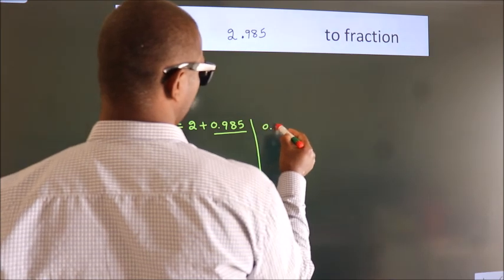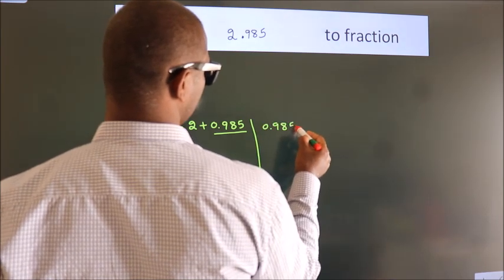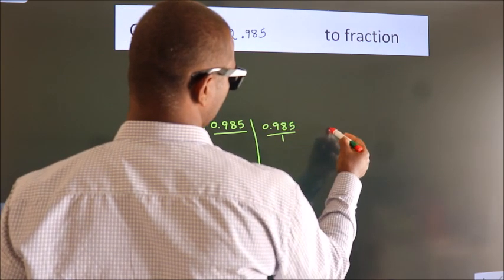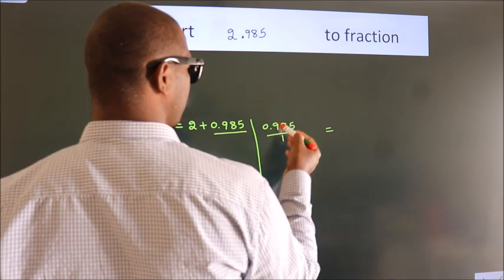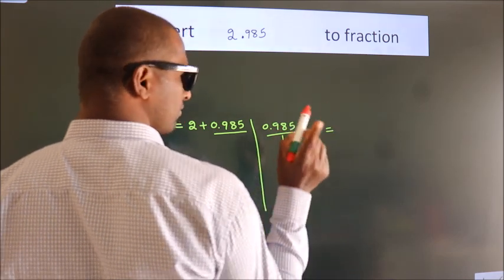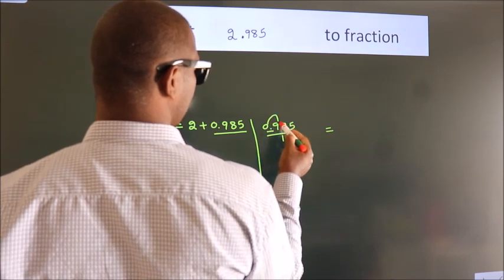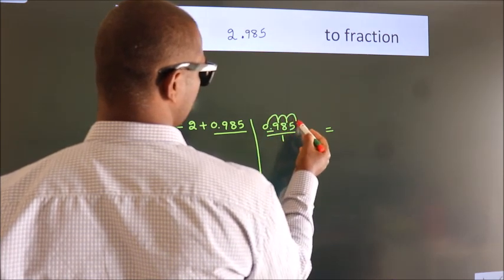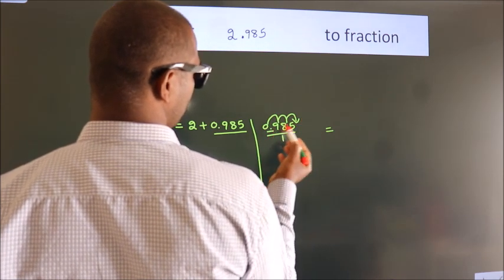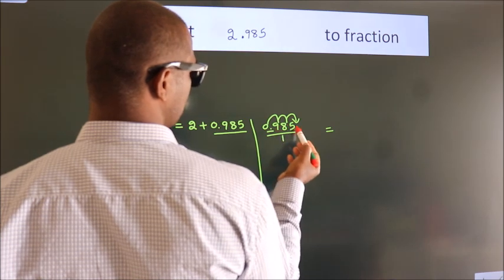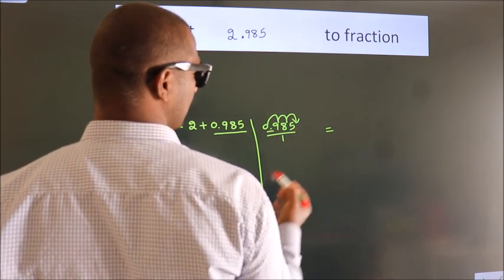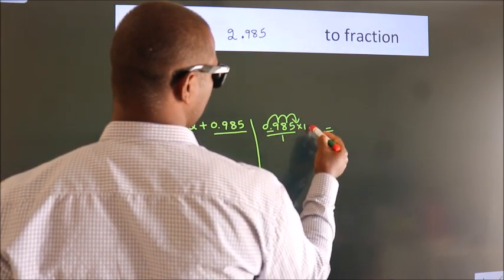So 0.985. To convert this to fraction, we have to move the decimal after 1, 2, 3 numbers. To move the decimal after 3 numbers, we multiply it with 1000.